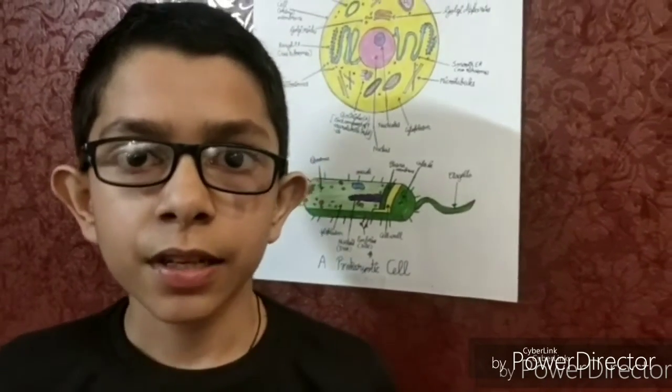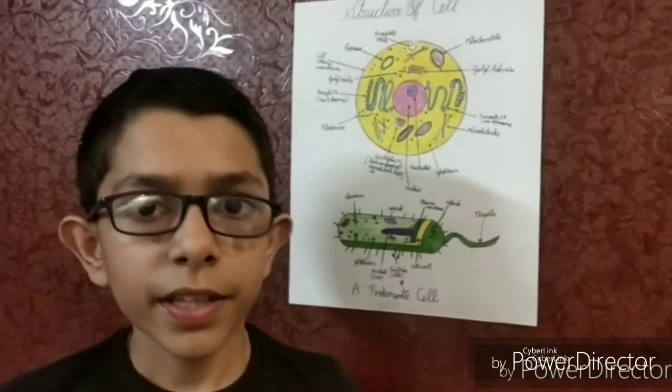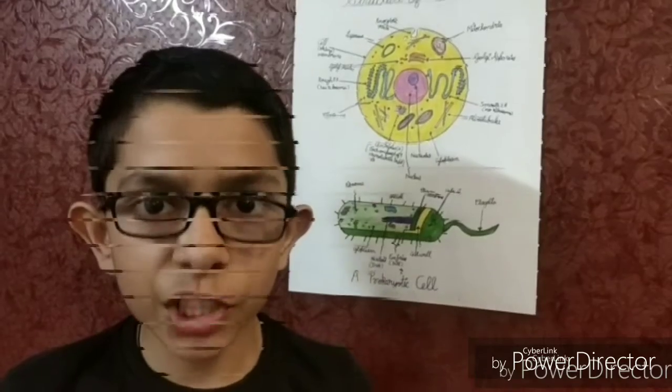Now comes the Golgi apparatus. It was first discovered by Camillo Golgi in 1898. It consists of sacs or flat discs known as cisternae. Each sac is parallel to each other. It helps in packaging and storing products received from the endoplasmic reticulum and also remains in association with the endoplasmic reticulum.